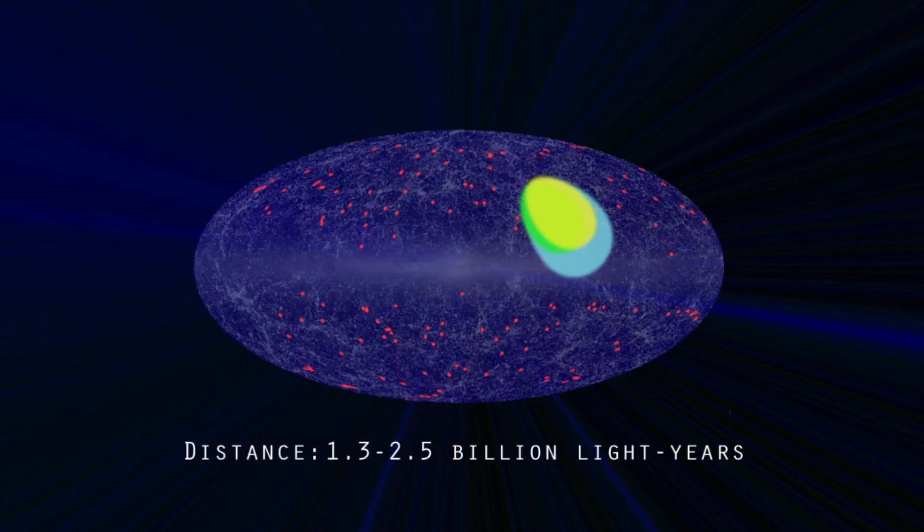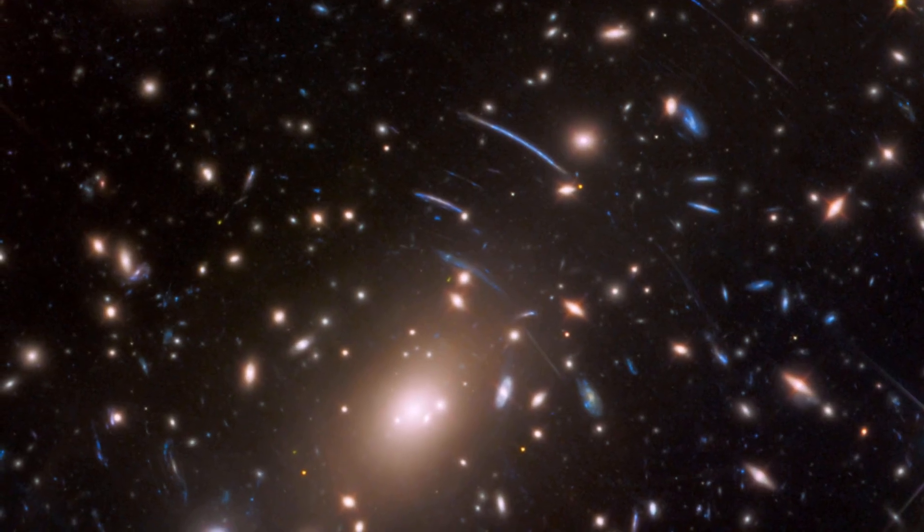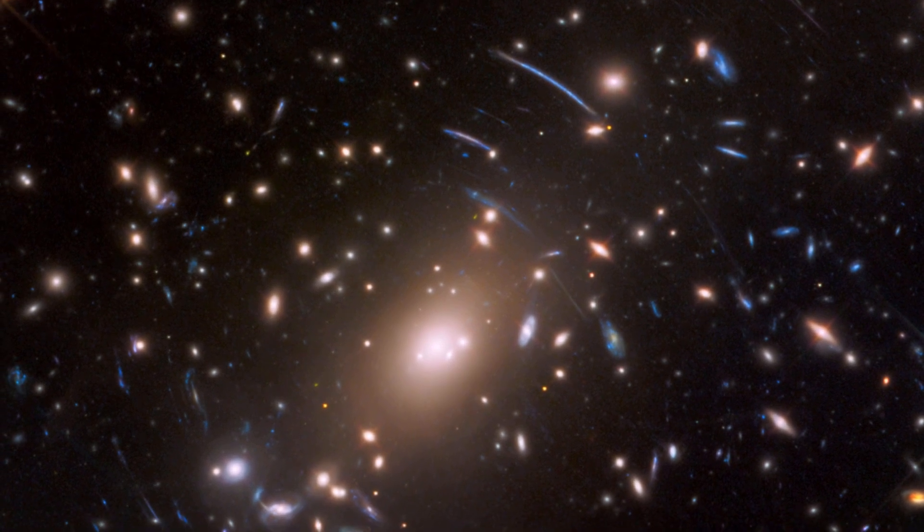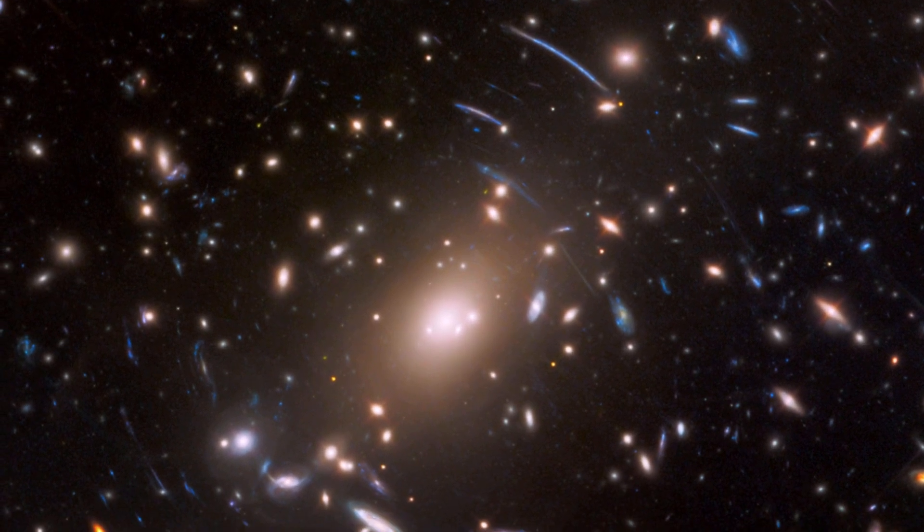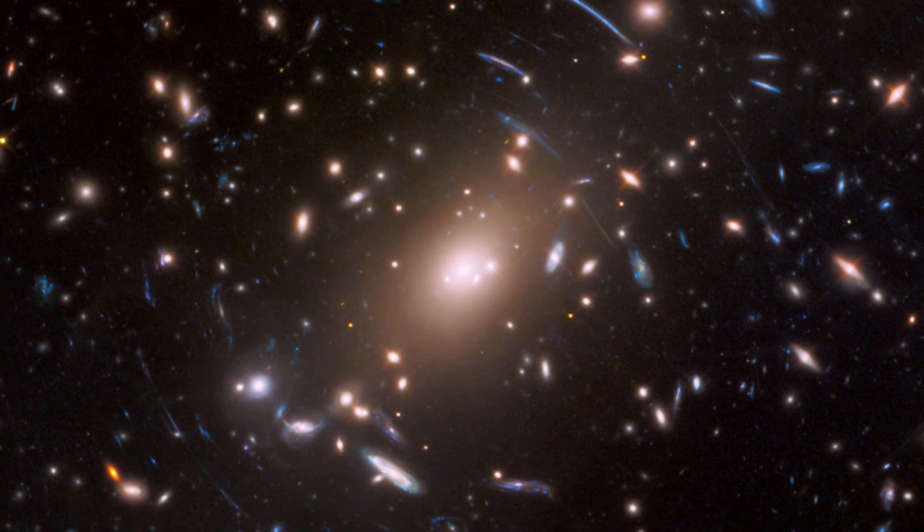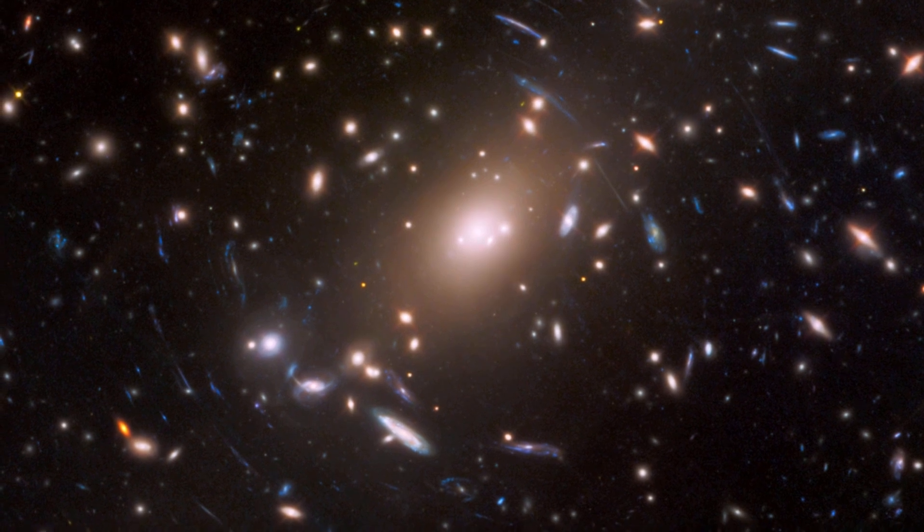The CMB is nearly isotropic, uniform in all directions, but researchers observed a slight anisotropy, non-uniformity, in the motion of galaxy clusters. The term dark flow was coined because the motion couldn't be attributed to any visible or observable matter, such as galaxies or galaxy clusters, in the observable universe.